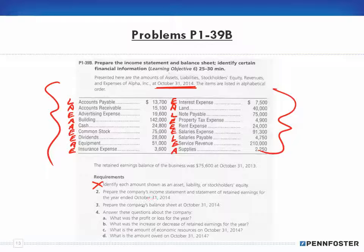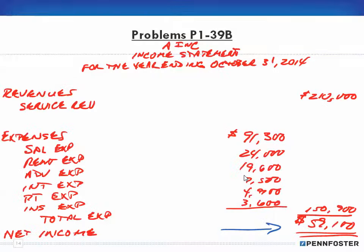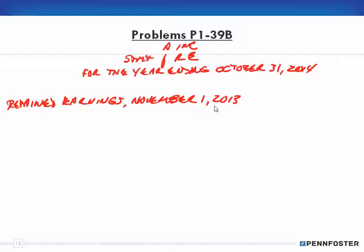Our year ending is 2014, but the data tells us the ending retained earnings balance was $75,600 as of October 31st, 2013. That's the ending date for the previous accounting period, and ending figures become beginning figures for the new period. Even though the textbook shows October 31st, 2013, I feel that's incorrect — it should be the beginning date of the next period, which is November 1st. In the real world you'd put November 1st, though putting October 31st won't be marked wrong educationally.